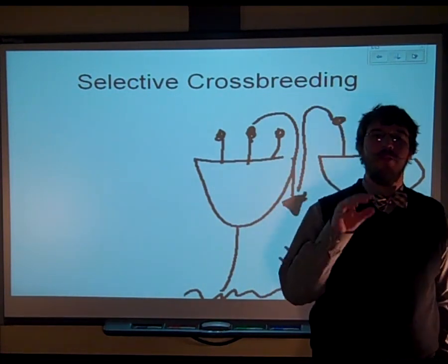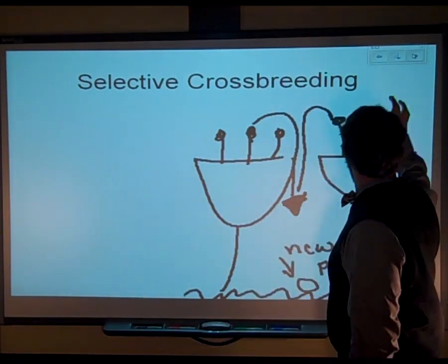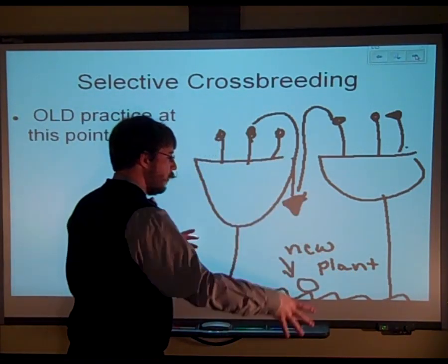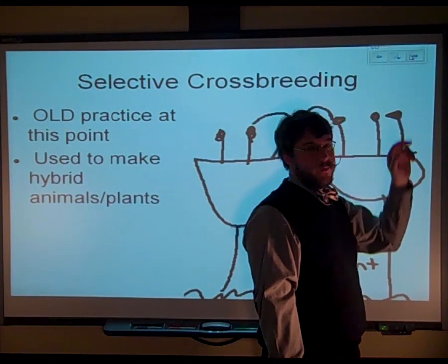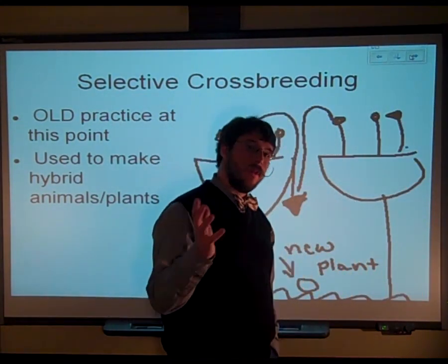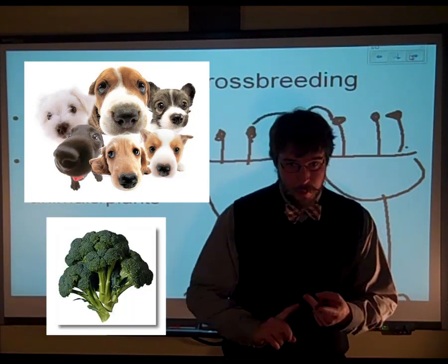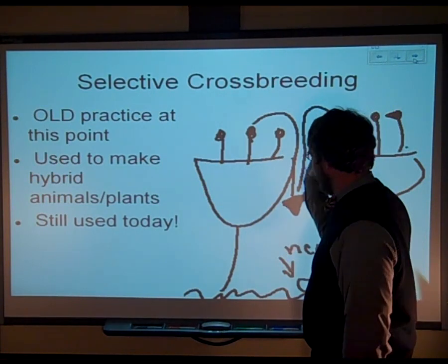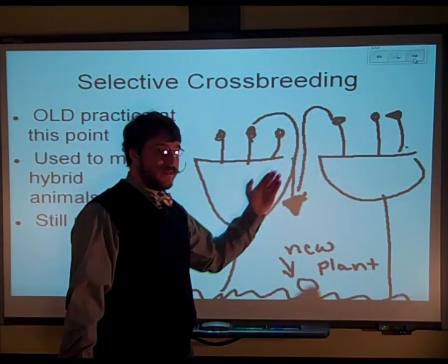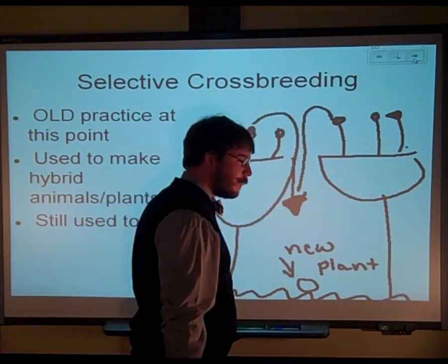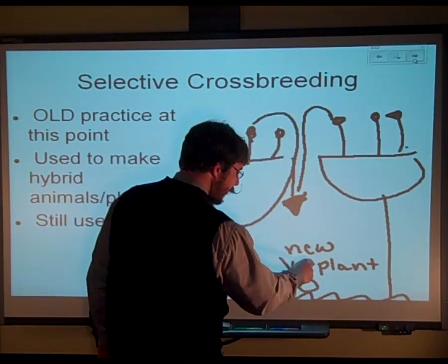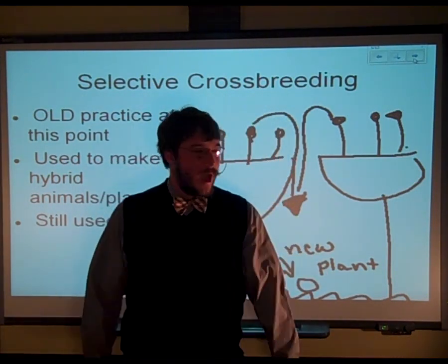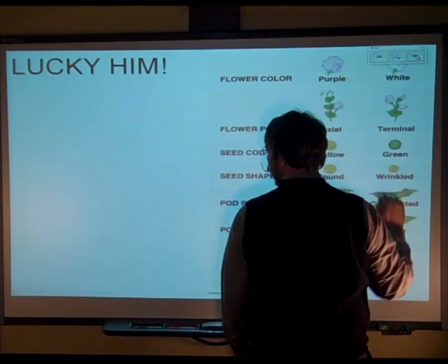He did this process called selective crossbreeding. For a quick recap for the non-farmers: even back in Mendel's day, this was a very old concept. This is basically how we invented different plants and animals like dogs and broccoli. Essentially, you take two parent plants whose traits you like, take their gametes, combine them, plant that seed, and you get a new plant with desirable traits and hybrid vigor, so you can make lots and lots of them.